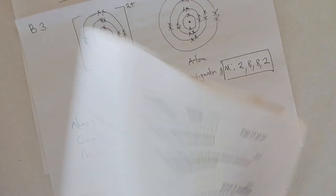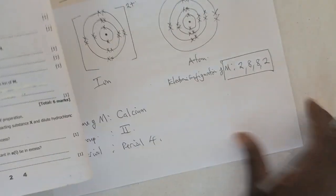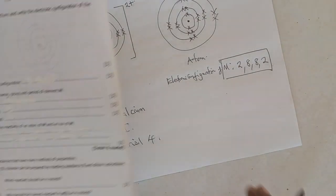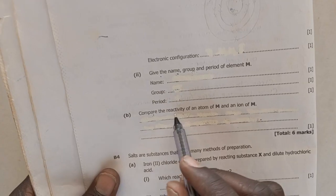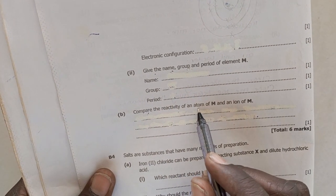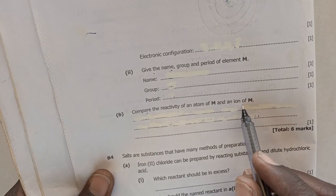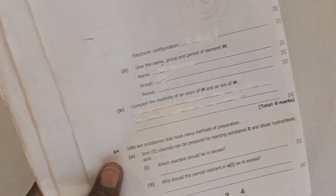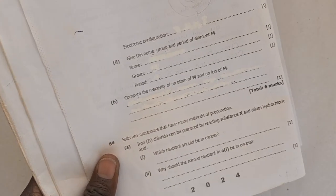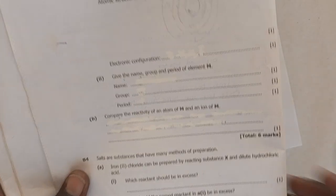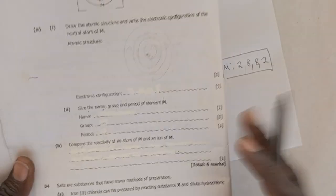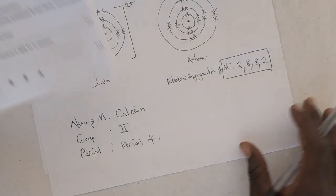So, that is the answer to that question. Then, there is another one which says, compare the reactivity of an atom of M and an ion of M. So, what are they trying to ask? They are trying to ask to say, how do the two react? How do the two react?